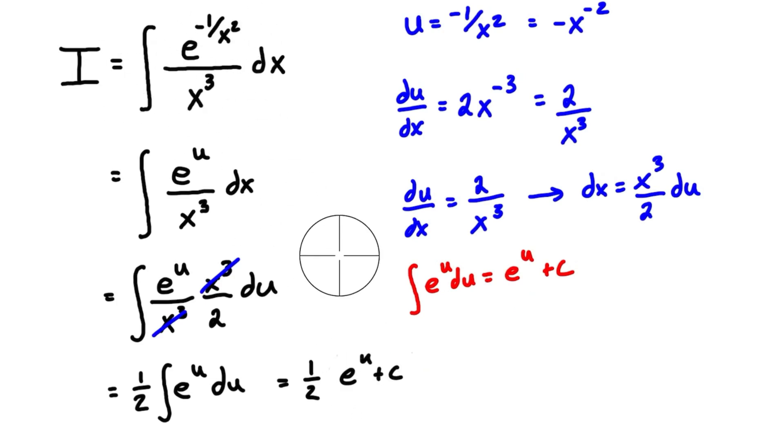But we were given this whole problem in terms of x, and what we want to do is give our answer in terms of x. So we just need to resubstitute back in what we had for u, which fortunately we have the expression right up here. So the final solution to our problem is going to be equal to one half e to the u, and that was negative one over x squared, plus c, and that is the answer to our problem.